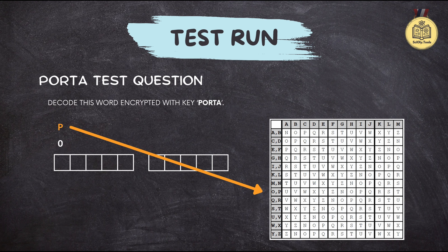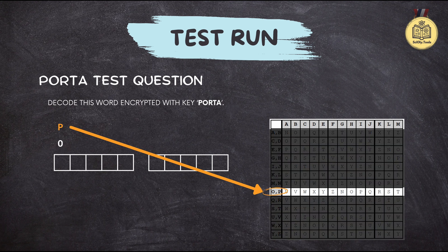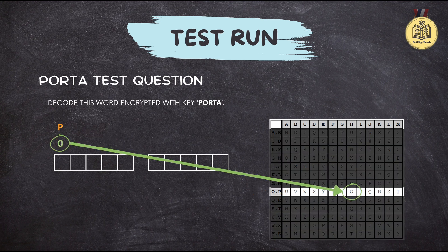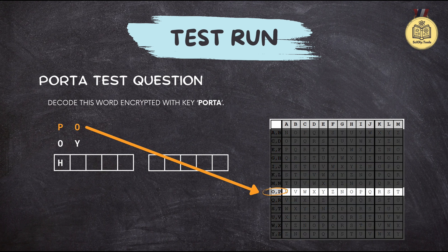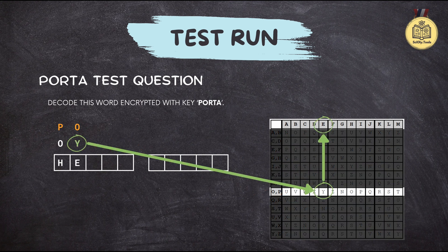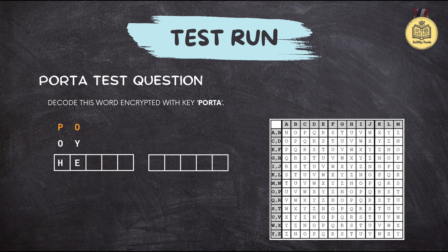Find the P row on the table. The O in that row falls under the H column, so our first decoded letter is H. Now move on to the second pair, Y and O. Find the O row on the table — the O row is the OP row, and the Y there is in the E column. So far we have H, E...